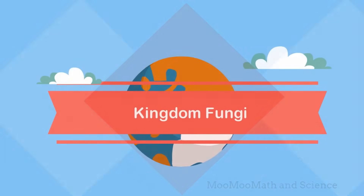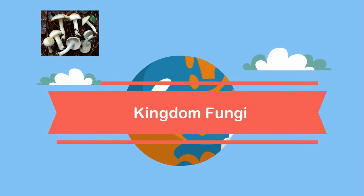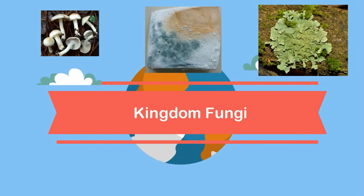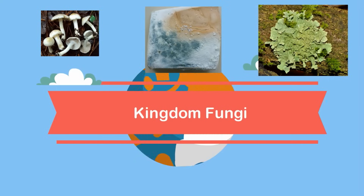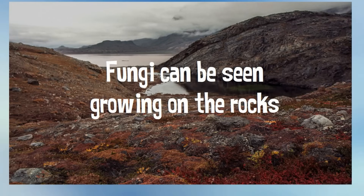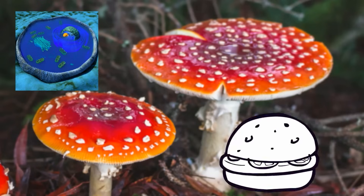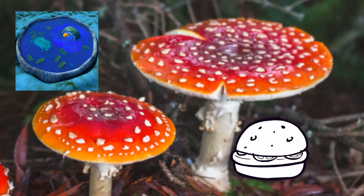Kingdom Fungi is made up of mushrooms, mold, yeast, and lichen. Fungi are very important to life on Earth, and many work with plants in a symbiotic relationship. Fungi have a nucleus and membrane-bound organelles, so they are considered eukaryotic. Most fungi are heterotrophs and get their energy from other organisms.